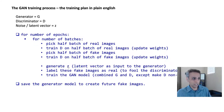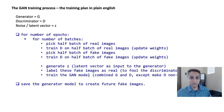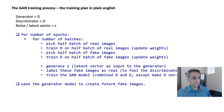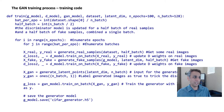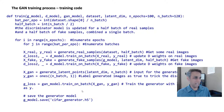Label the fake images as real — because we want to fool the discriminator. Then train the combined GAN model on those inputs. Since the discriminator is non-trainable in the combined model, only the generator is updated. This is how the generator improves over time. Once all epochs are done, save the generator model to generate new realistic images.